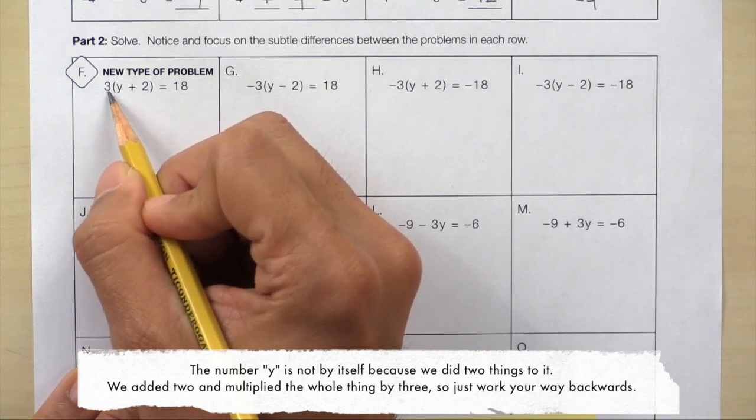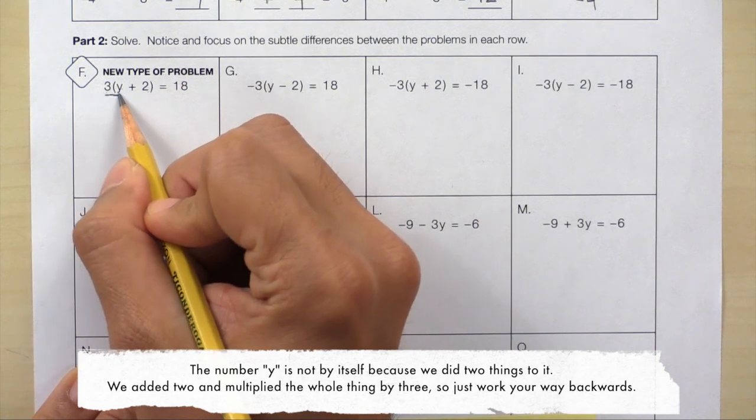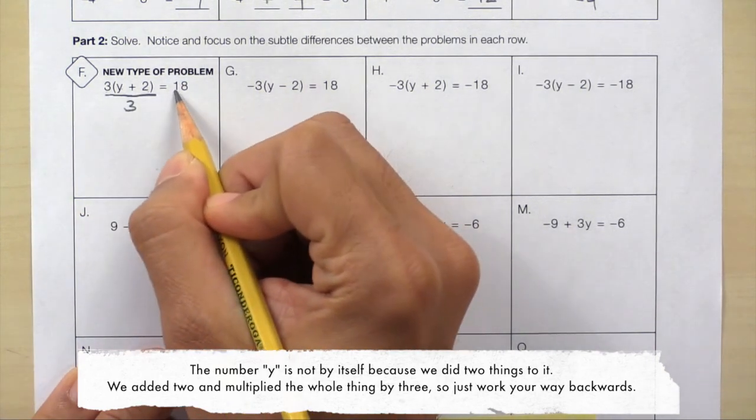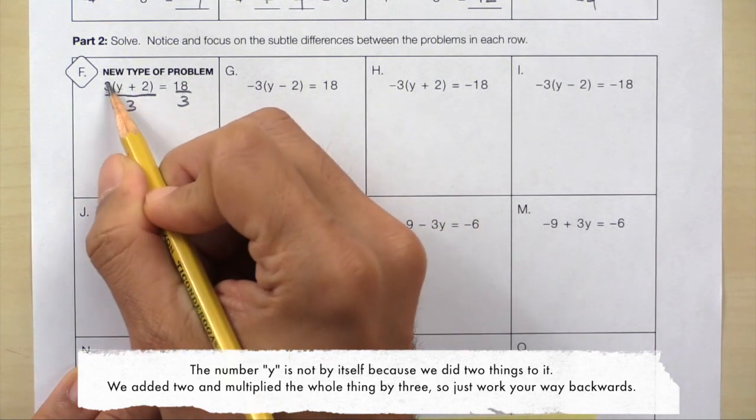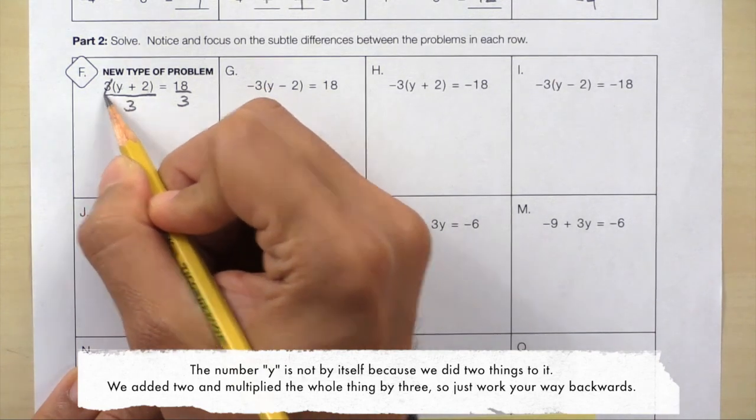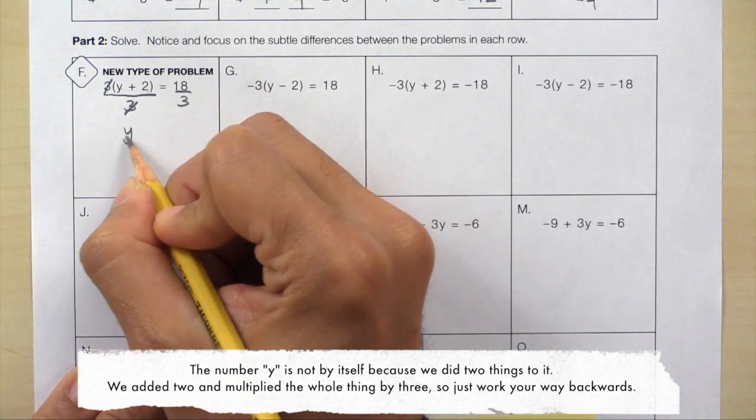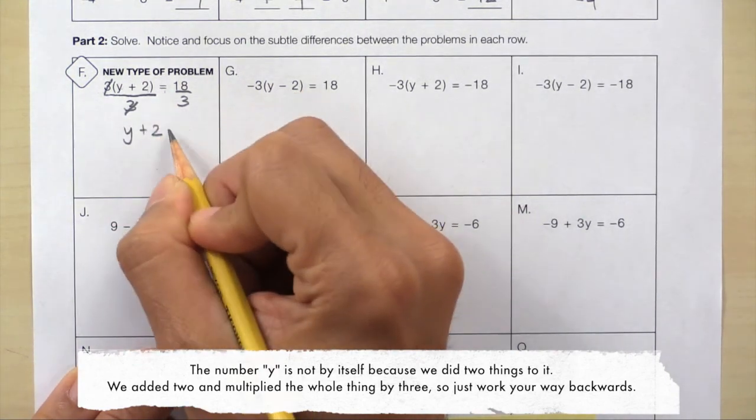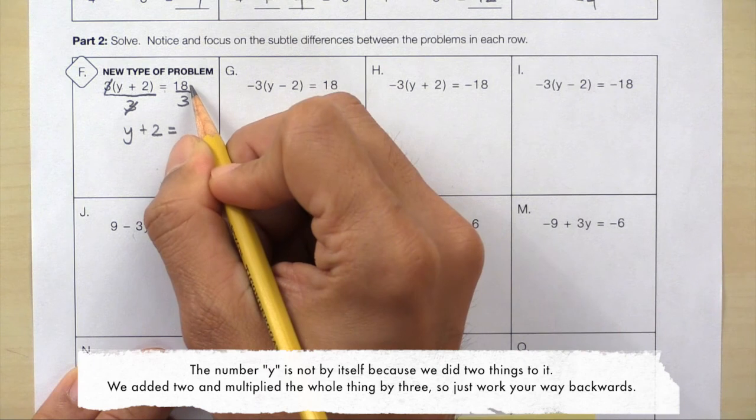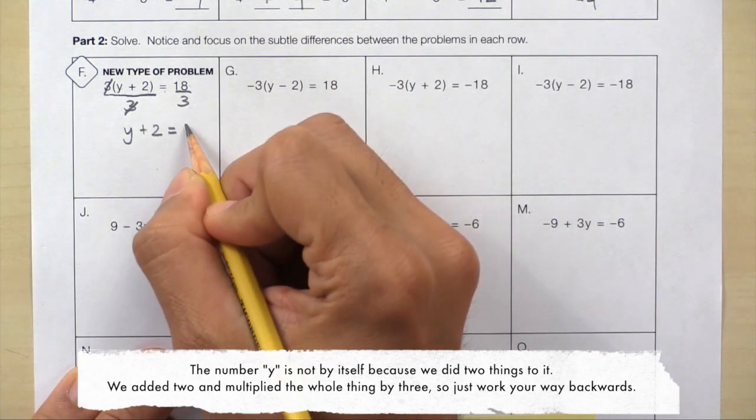Instead of multiplying by 3, divide by 3. 3 divided by 3 equals 1. Now we have y plus 2. Here's the equal sign. And 18 divided by 3 equals 6.